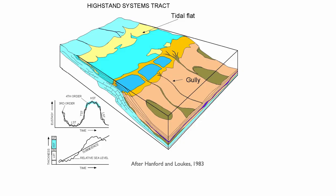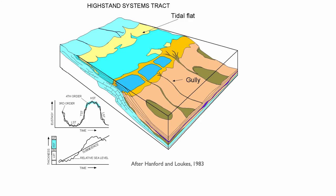You also have a more pronounced lagoon during the highstand system tract, and the reefs tend to be at their best. So we have the most production of carbonates during the HST — well-developed reef deposits, and still some shoal sands being deposited. Mass transport deposits are possible at any stage, as suggested on this diagram.